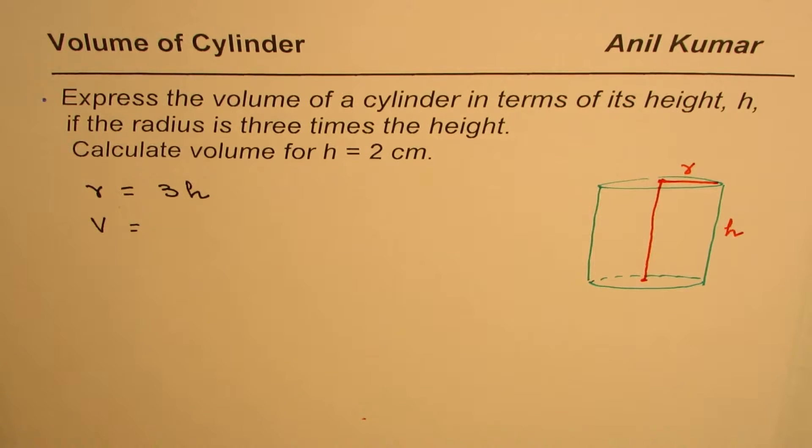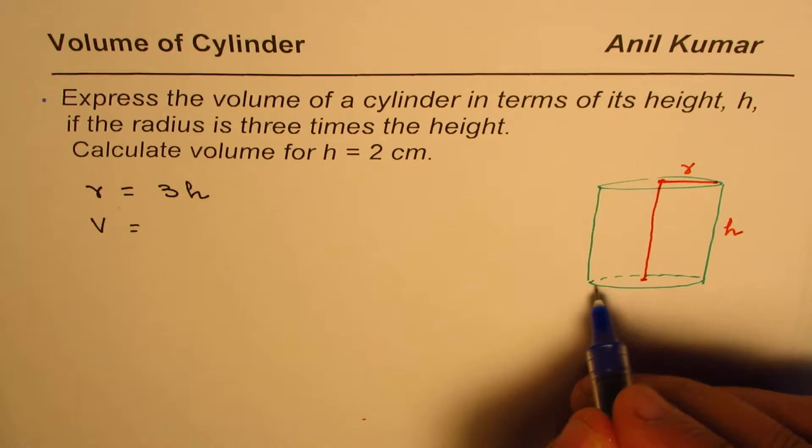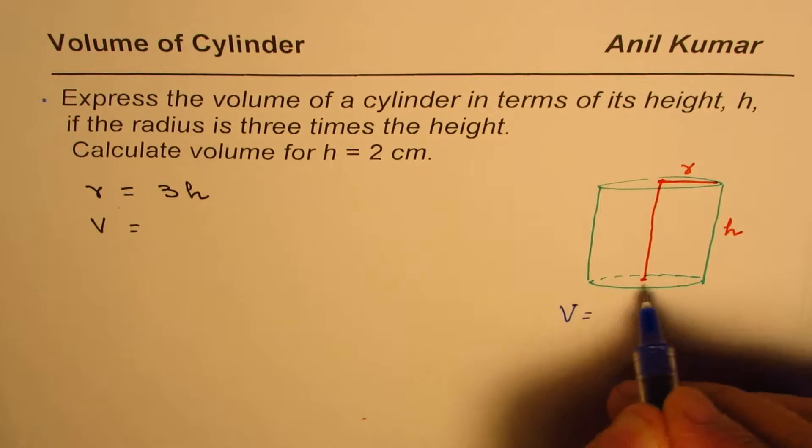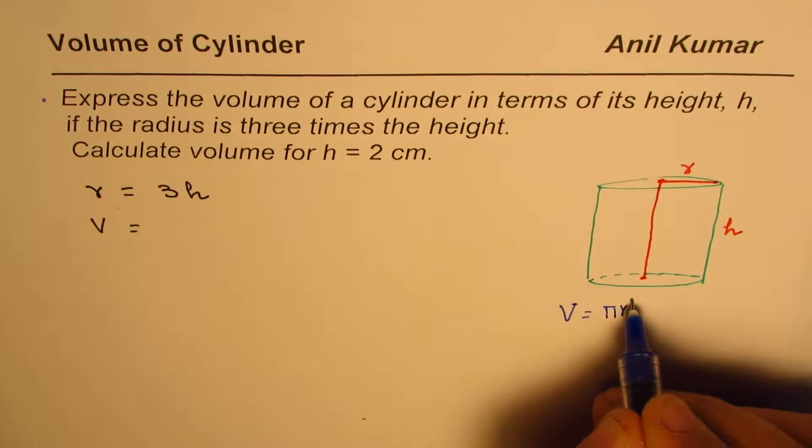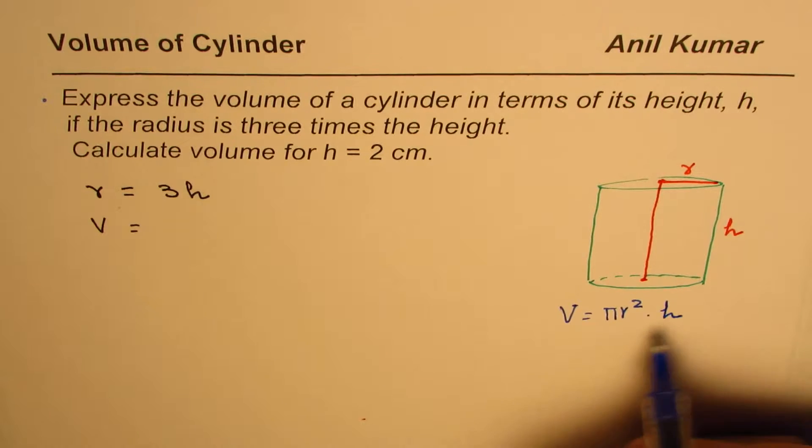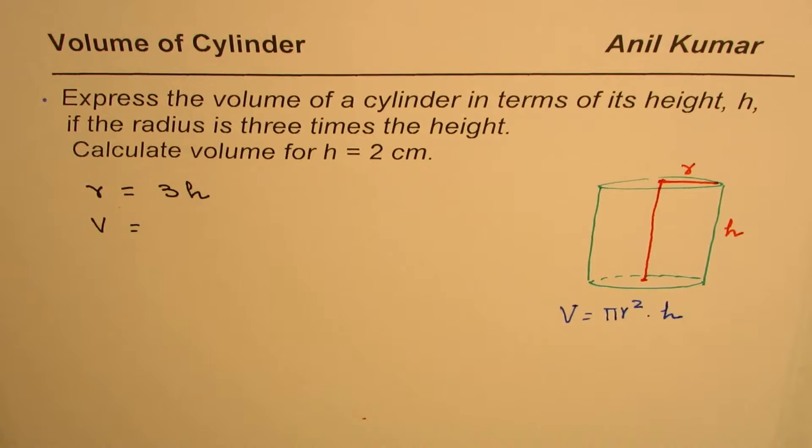Now can you tell me what is the volume of a cylinder? Well, the volume, as you know, is area of the base, which is a circle, πr², times height. So that becomes the volume of this cylinder.